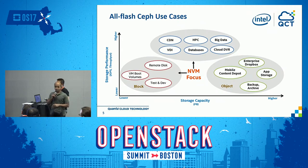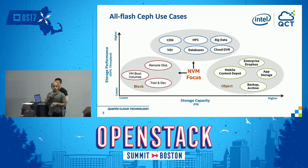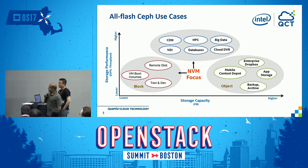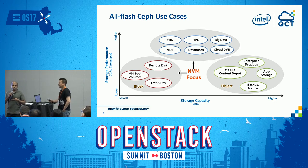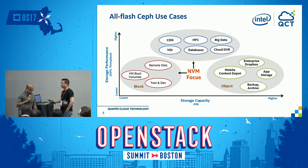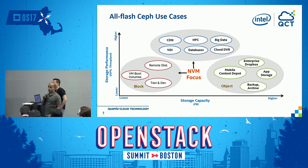Ceph remains the block storage of choice for most OpenStack deployments with RBD. This chart shows the spectrum — the y-axis is performance scale, the x-axis is capacity scale. Capacity-oriented use cases still tend to use generic hard drive media for dense capacity nodes, whereas non-volatile memory and solid-state focus applies to block workloads. In our exercise done jointly with QCT, we focused on databases as the workload.